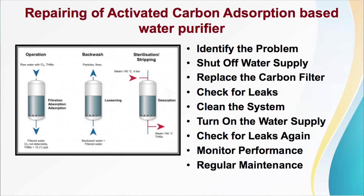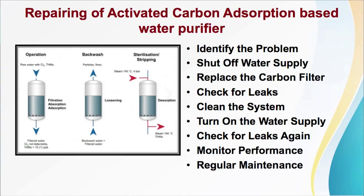You will follow the same steps. Number one, identify the problem — determine the specific issue with your activated carbon water purifier. Common problems include reduced water flow, unusual taste, odor, leaks, or filter replacement if required. As a first step, shut off the water supply — turn off the water supply to the water purifier to prevent water from entering the system during the repair process.